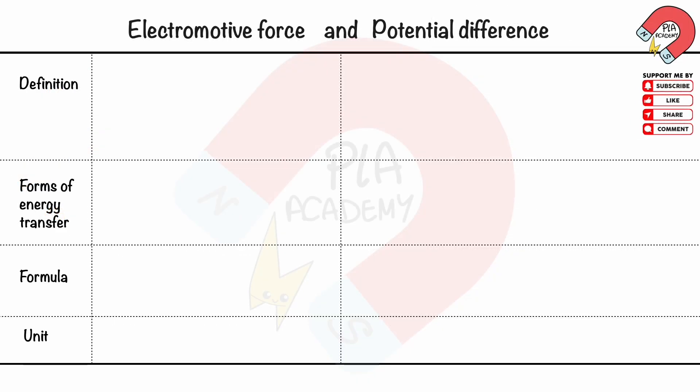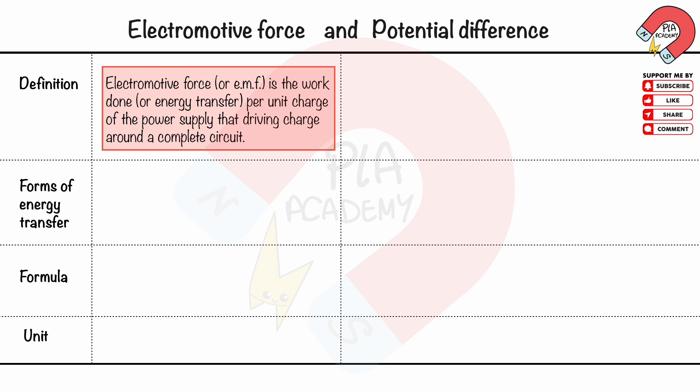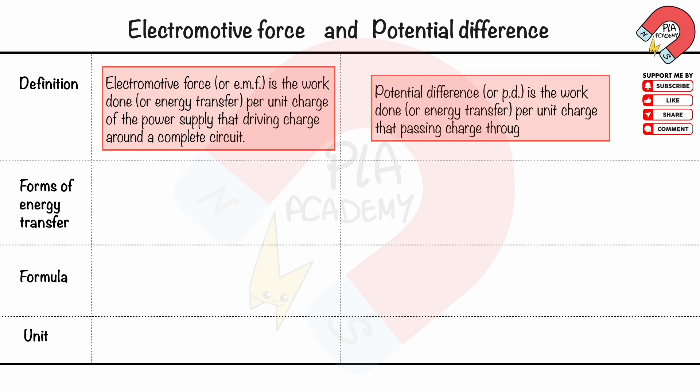To distinguish the electromotive force, or EMF, and potential difference, or PD: electromotive force is defined as the work done, or energy transferred, per unit charge of the power supply that drives charge around a complete circuit. Potential difference is defined as the work done, or energy transferred, per unit charge passing through a component.